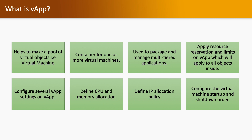Apart from these features, VApp also has an option for prioritizing the shutdown and startup order of virtual machines. This is used most commonly in disaster recovery scenarios, where you want to power on specific virtual machines in a specific priority — for example, configuring that VM A will power on first and VM B will power on after VM A comes up. That feature is available in VApp.